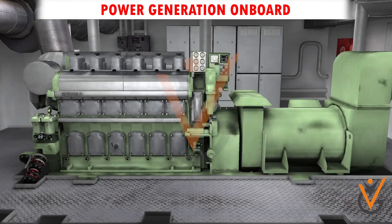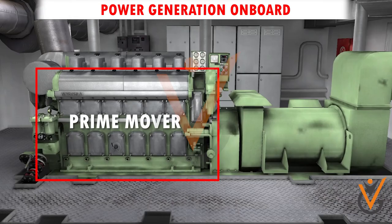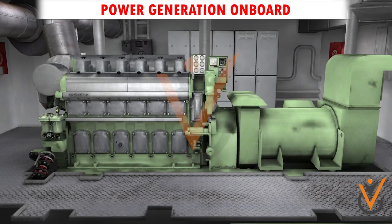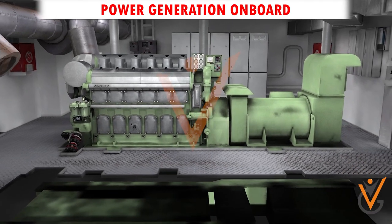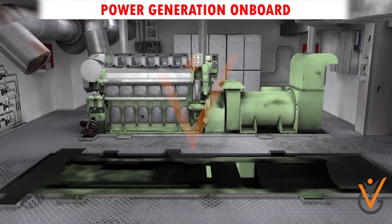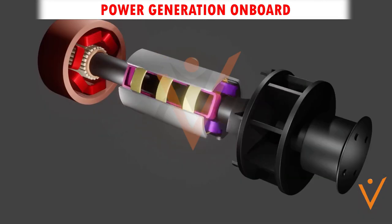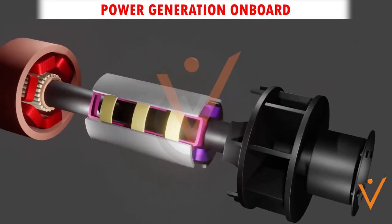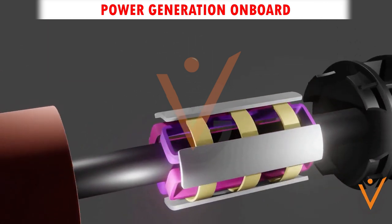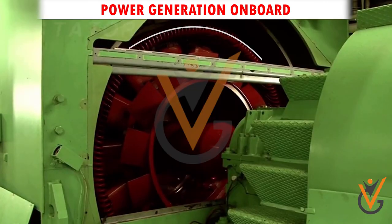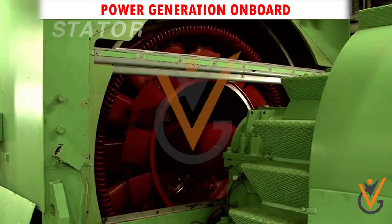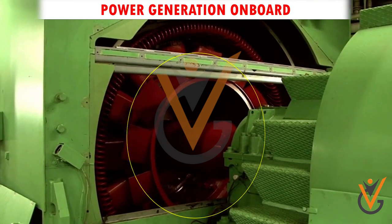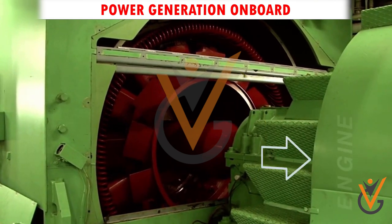Power generation on board ship: power is generated using a prime mover and an alternator working together. For this, an alternating current (AC) generator is used on board. The generator consists of a stationary set of conductors wound in coils on an iron core, known as the stator. The rotor is located between the stator, and the alternator is connected to an auxiliary engine.